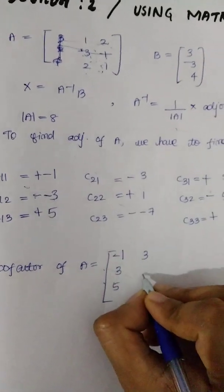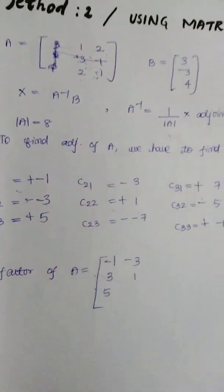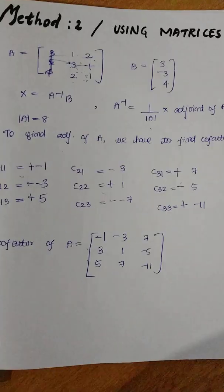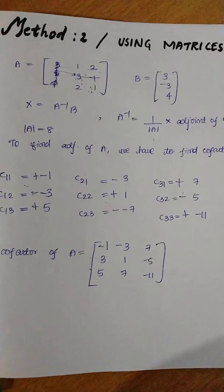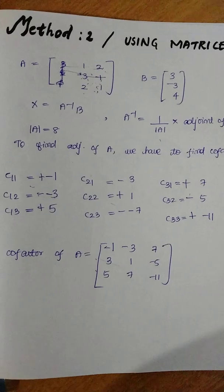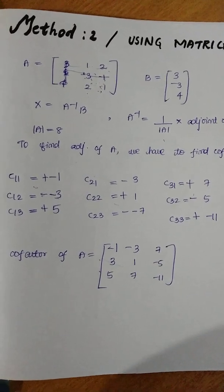Minus 3, 1, 7. Cofactor of A — let's put this again, cofactor of A. Now add the adjoint.